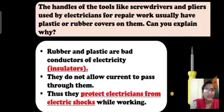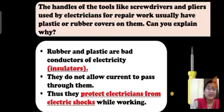One question: the handles of tools like screwdrivers and pliers used by electricians for repair work usually have plastic or rubber covers on them — can you explain why? Electricians generally handle appliances that run on electricity. Rubber and plastic are bad conductors — they are insulators that do not allow electricity to pass through them. Thus, they protect the electrician from electric shocks while repairing electronic devices.